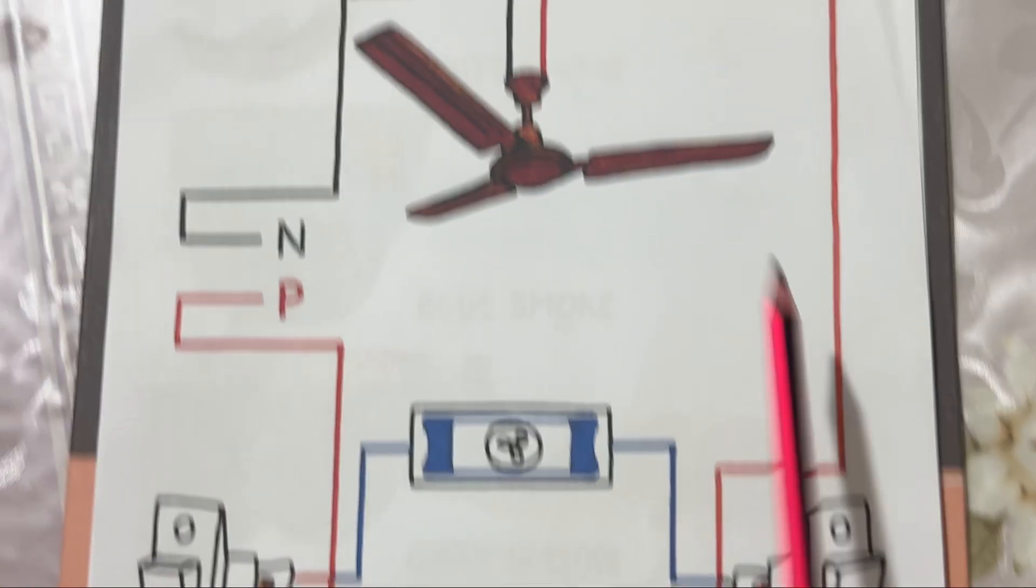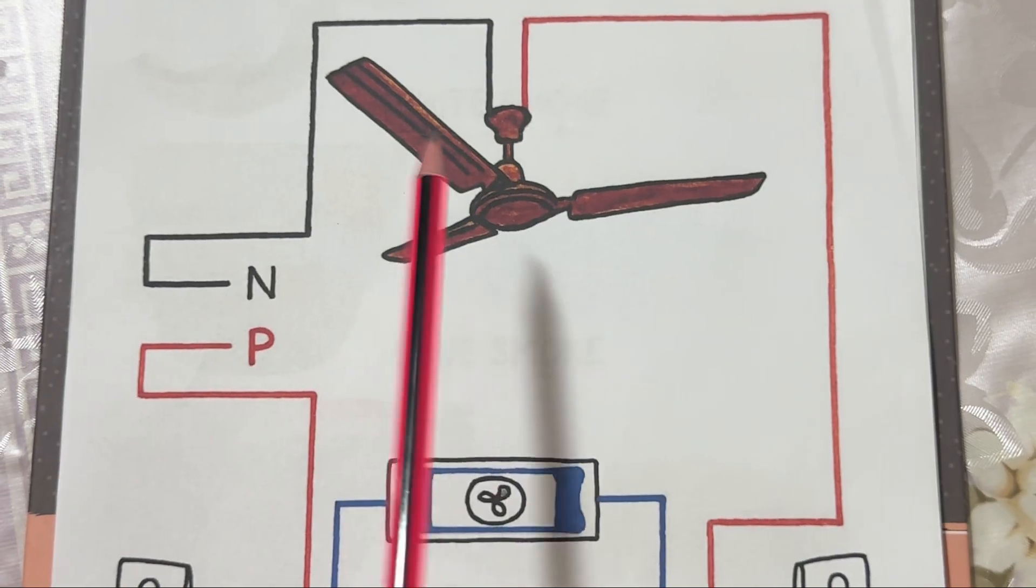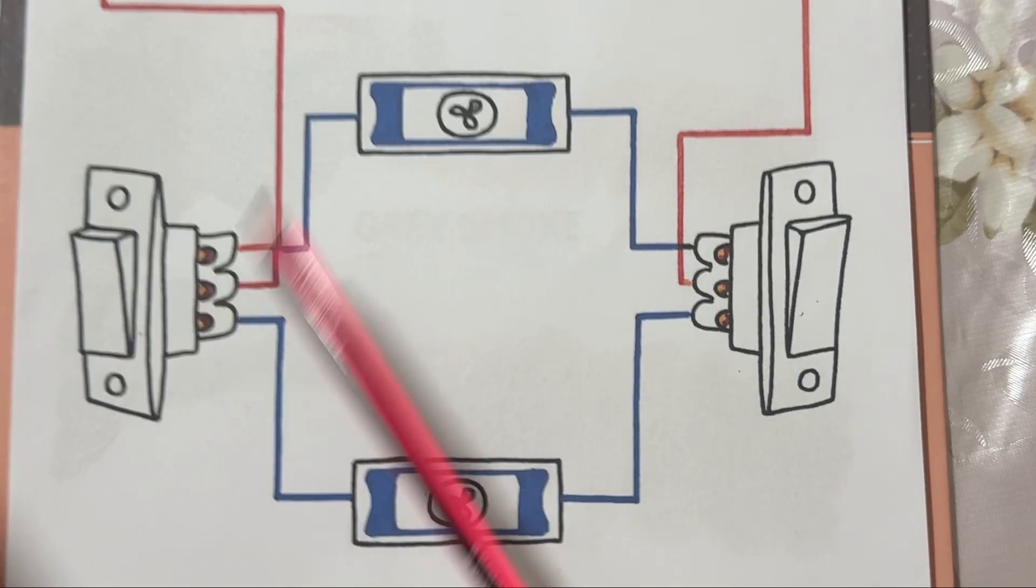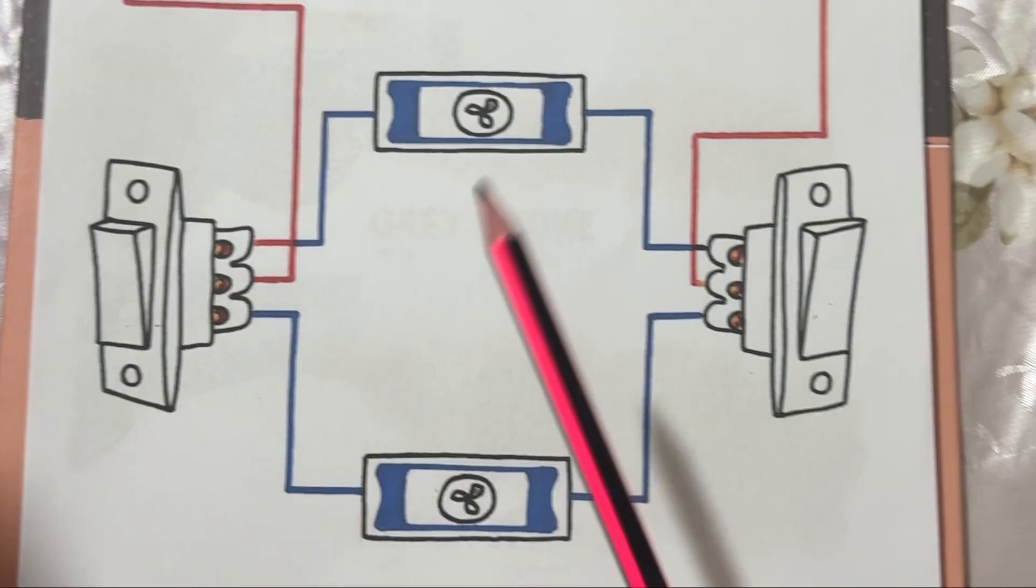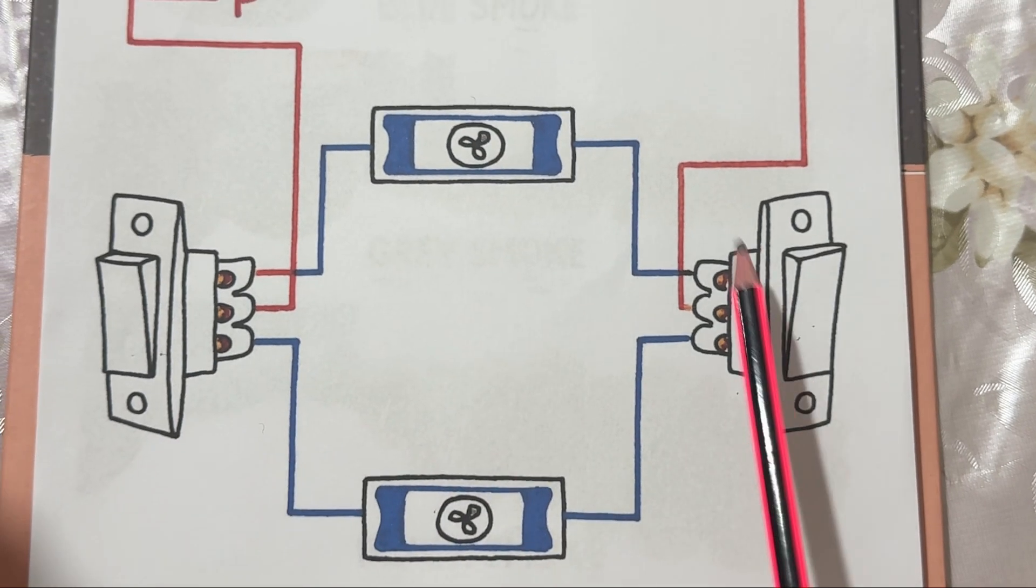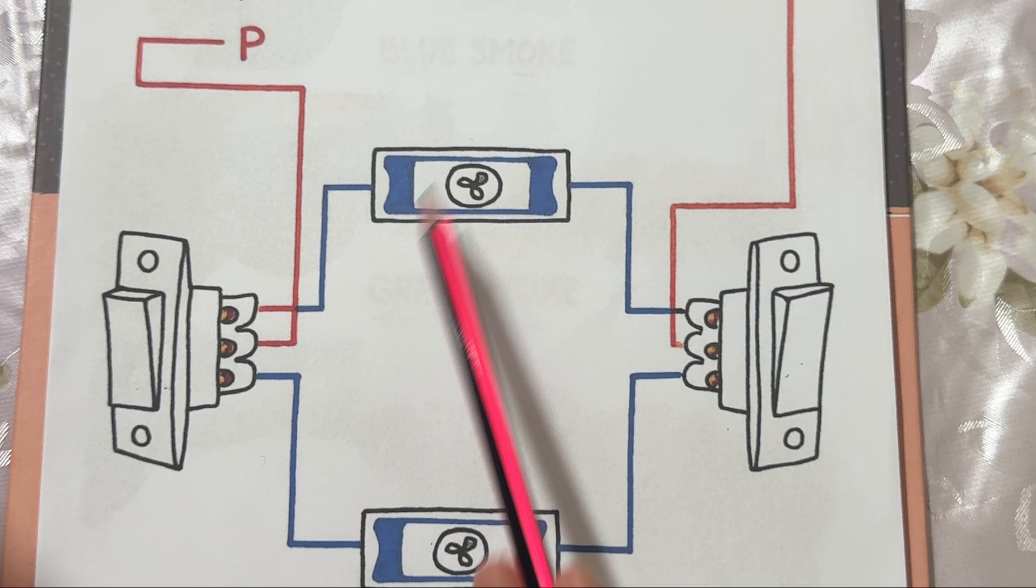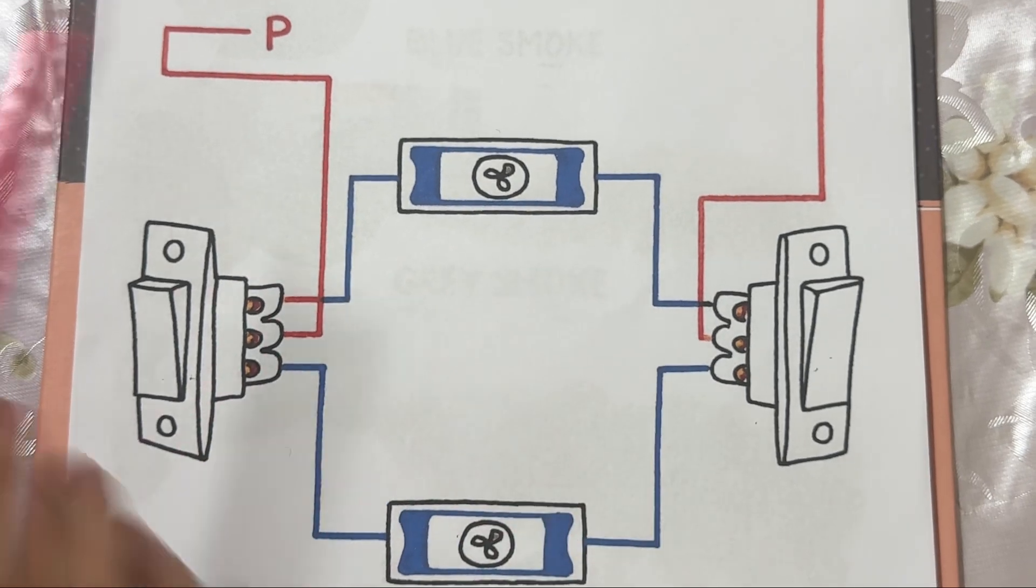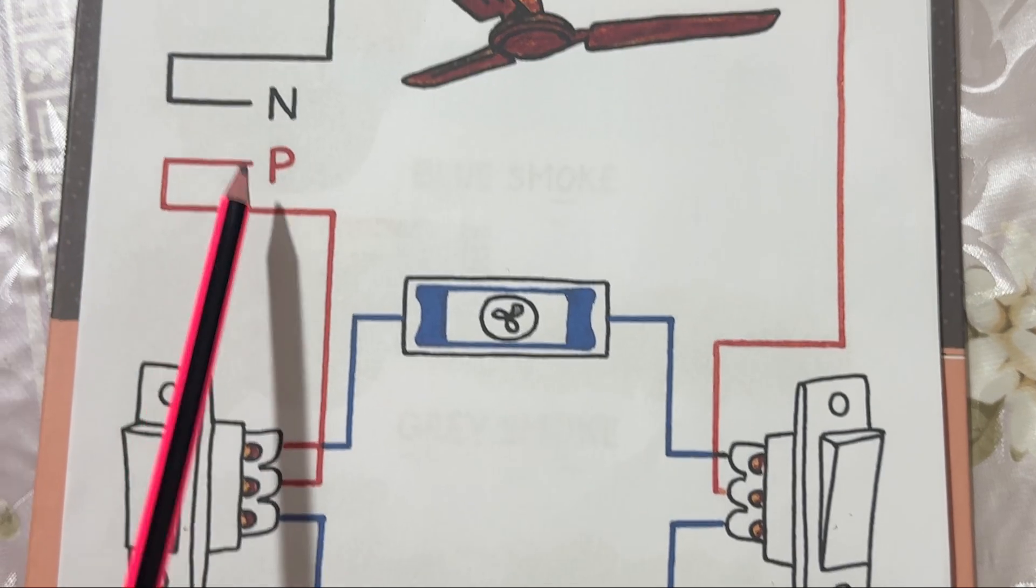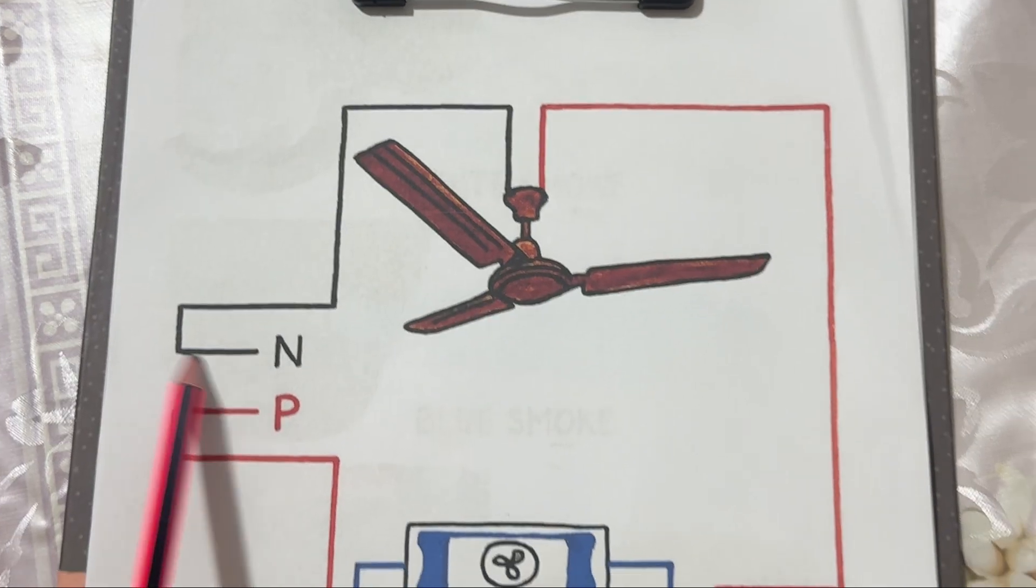In this wiring diagram, we have one ceiling fan as the load, two switches (one on each side) for on and off control, two fan regulators (one on each side) which will adjust the fan speed, and power supply wires: phase in red and neutral in black.